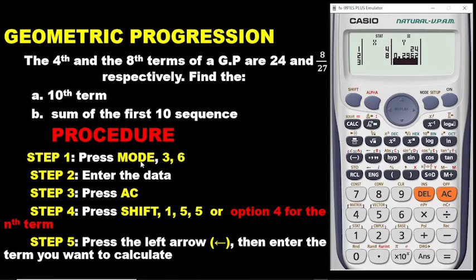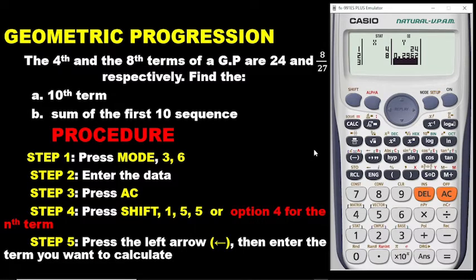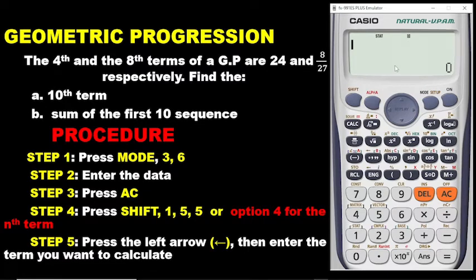Step 1: press MODE, 3, 6 — done. Step 2: enter the data — done. Under the X coordinate you put the number of terms, under Y you indicate the corresponding values. Once done, the calculator saves your data automatically. Move to the next stage by pressing AC. As long as you see 'stats' on the display, your data is still intact on the calculator. Steps 1, 2, and 3 are complete.